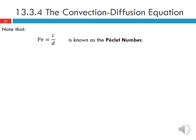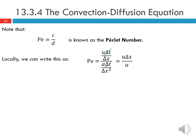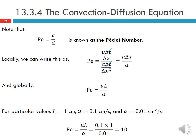We can also look at the relationship between C and D, where PE equal to C over D is known as the Peclet number. Locally, the Peclet number is U*delta_X over alpha, and globally the Peclet number is U*L over alpha. This relates U and alpha together for a given problem. For particular values such as L equals 1, U equals 0.1, and alpha equals 0.01, we can calculate the Peclet number and get PE equal to 10.